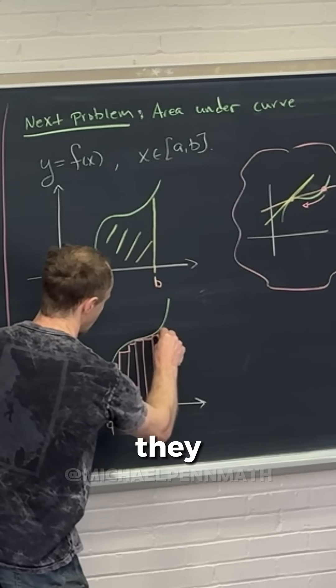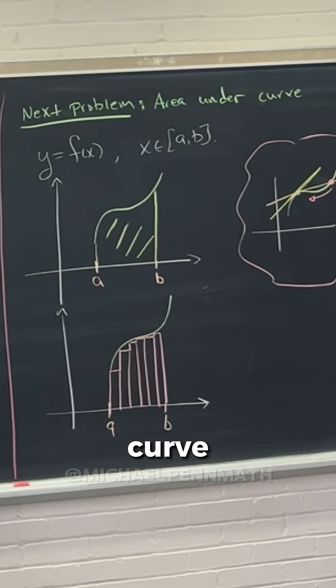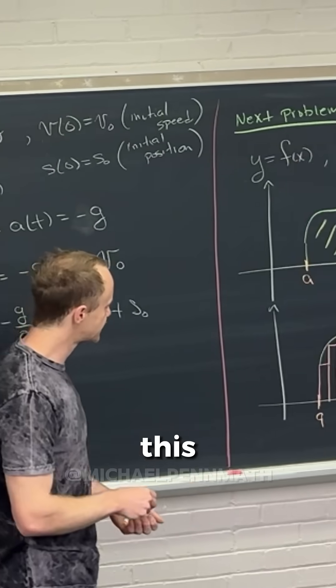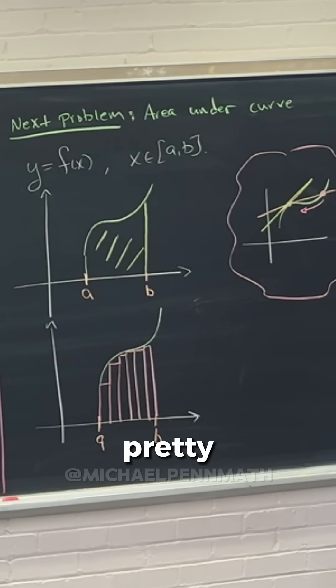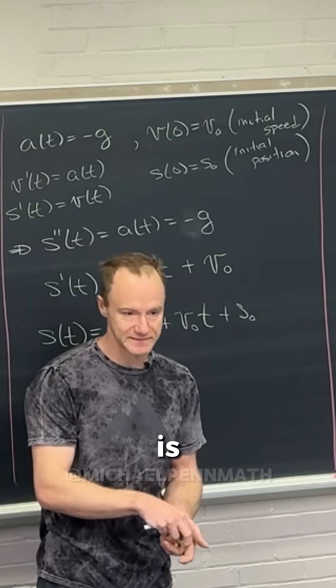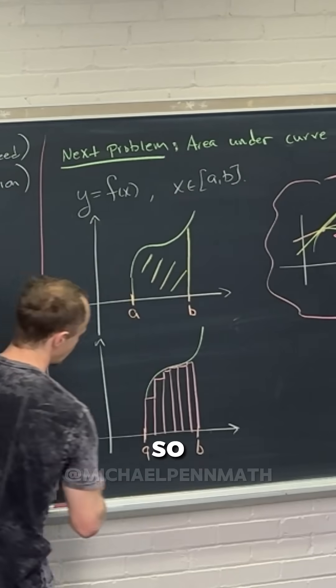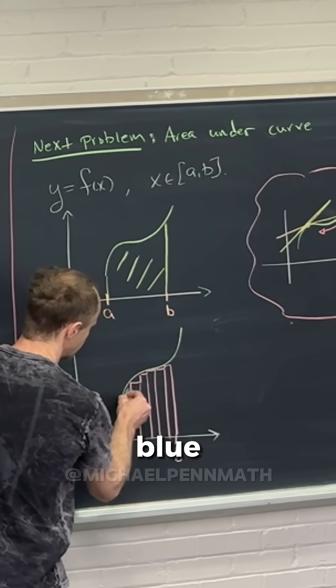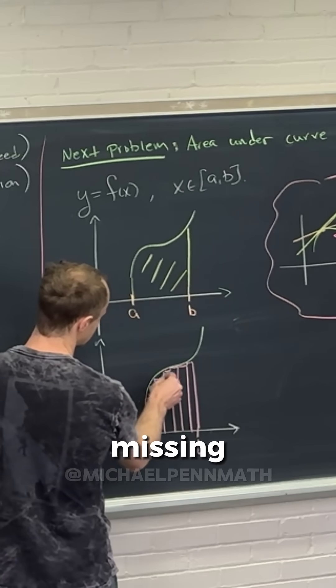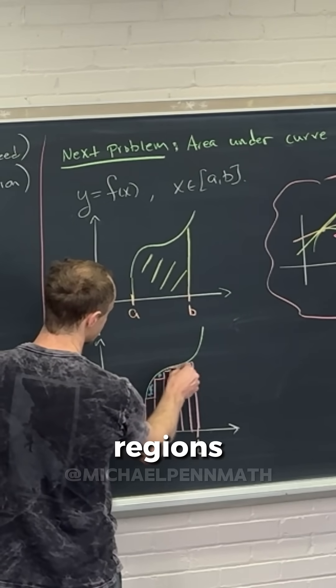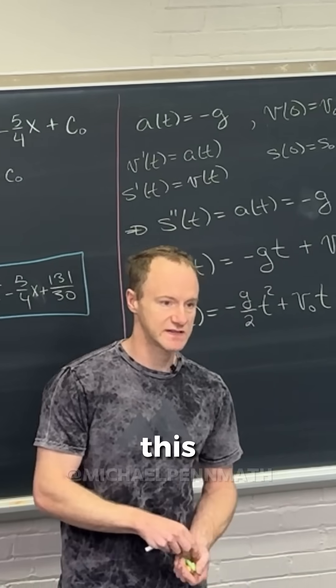If you look at this, the area of those rectangles is a pretty close approximation, but it is missing some stuff. For instance, it's missing this blue region up here. It's missing all of these little blue regions.